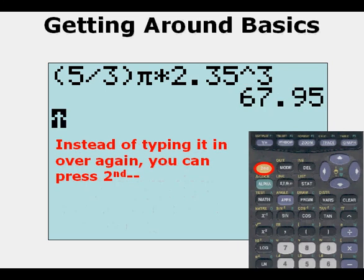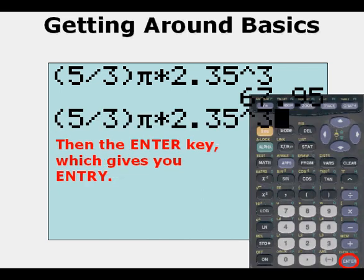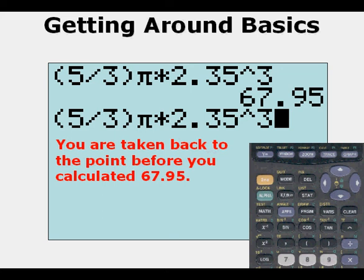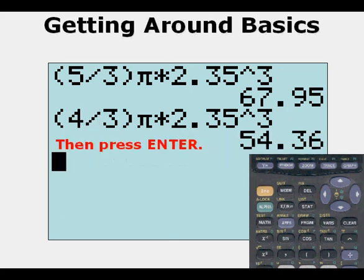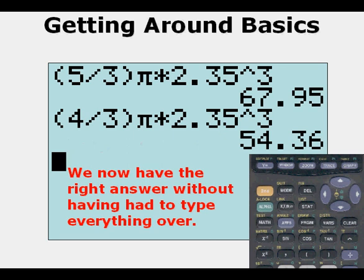In this case I made a mistake. I used five thirds instead of four thirds, and I can fix it by pressing 2nd then the ENTER key. I can just scroll back to go over the five and put a four instead and press ENTER. That's why I didn't have to retype everything, so that was a very useful feature.